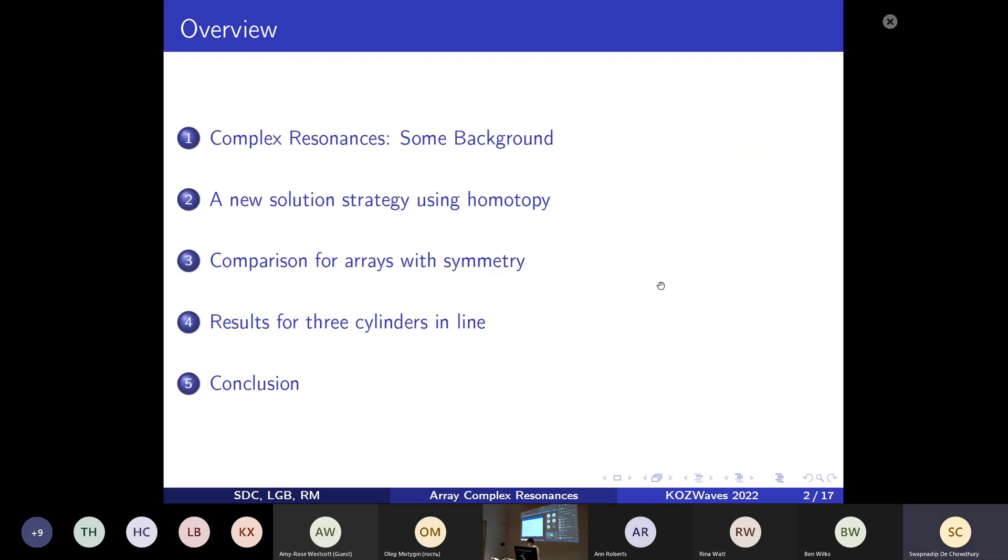First, I'll give some background on complex resonances, then describe the new method we're using to compute them for arrays. Then I'll apply this method for cases with arrays with and without symmetry in their underlying geometrical configuration.